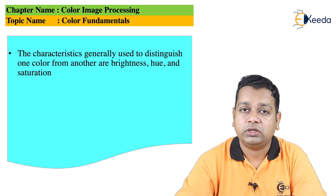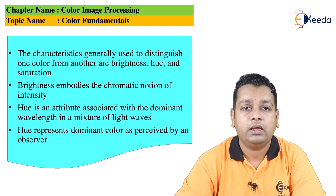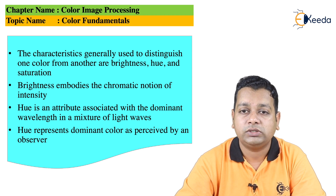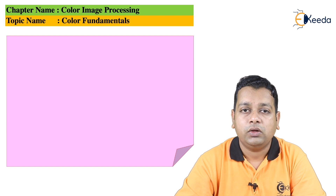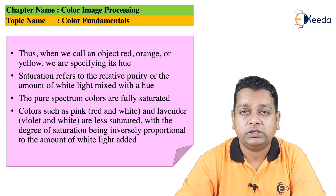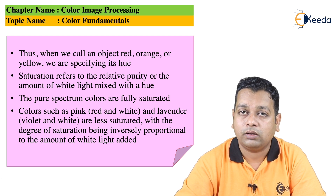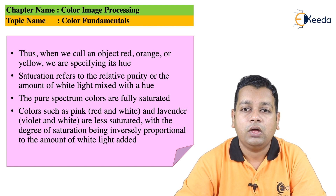The characteristics used to distinguish one color from another are brightness, hue, and saturation. Brightness embodies the achromatic notion of intensity. Hue is the attribute associated with the dominant wavelength in a mixture of light waves — it represents the dominant color as perceived by an observer; when we call an object red, orange, or yellow, we are specifying its hue. Saturation refers to the relative purity or the amount of white light mixed with the hue. Pure spectrum colors are fully saturated; colors such as pink (red + white) or lavender (violet + white) are less saturated, with saturation inversely proportional to the amount of white light added.